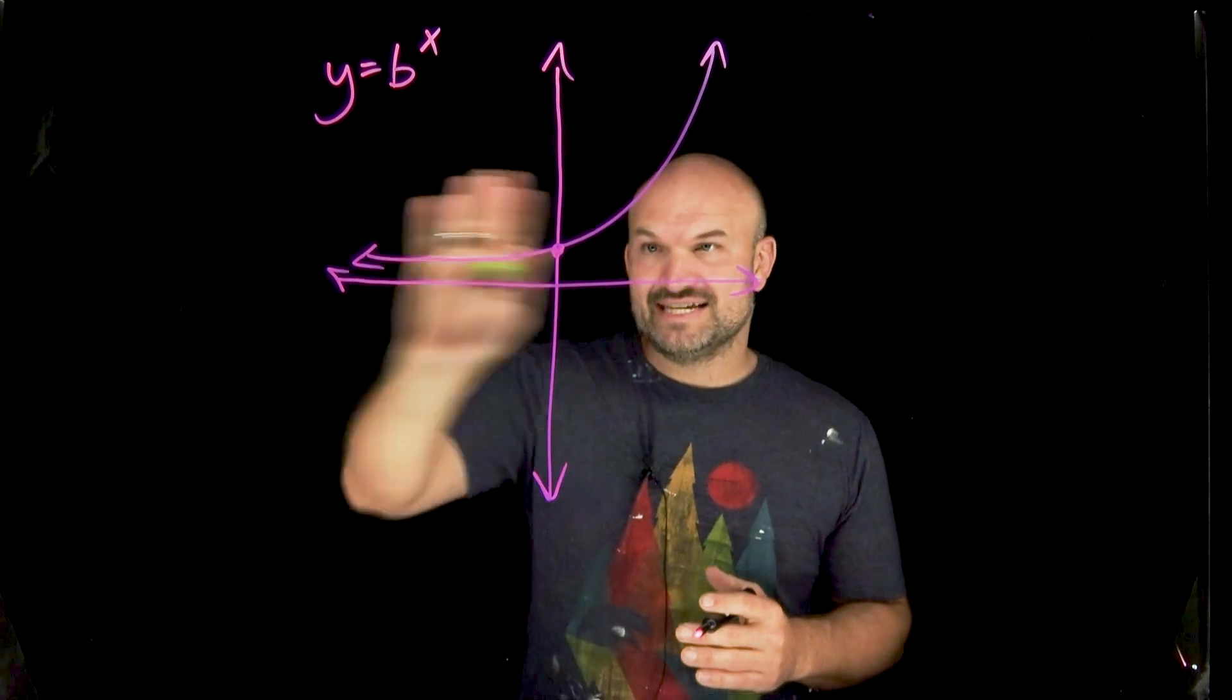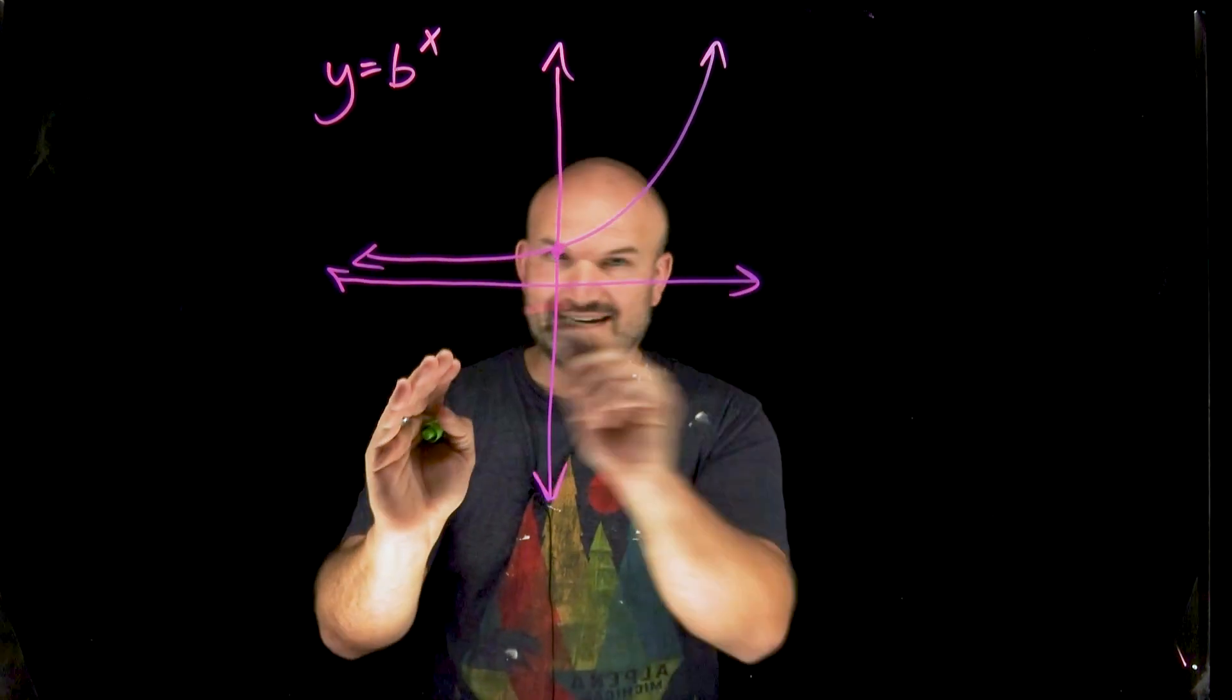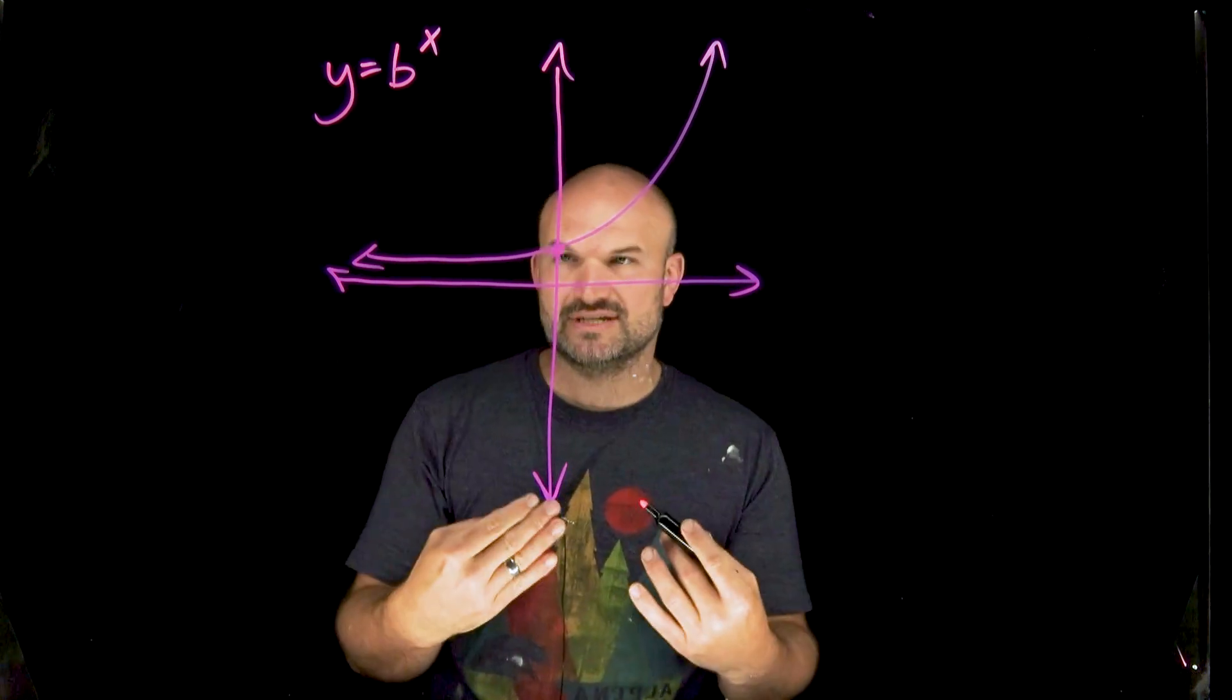The graph is also for all positive values. There's nothing negative down here. And that's going to make sense here in just a little second.